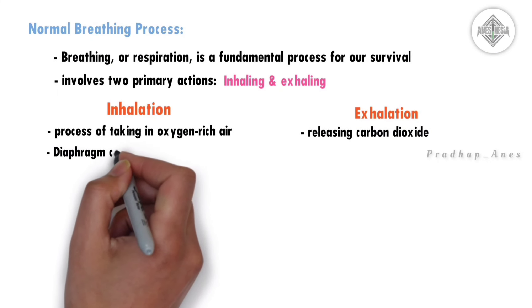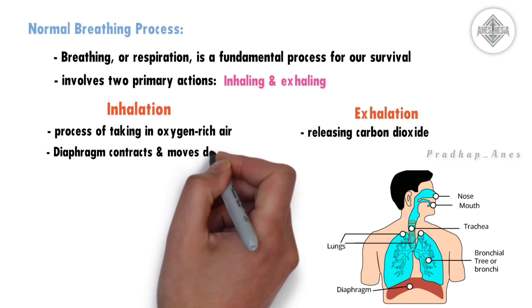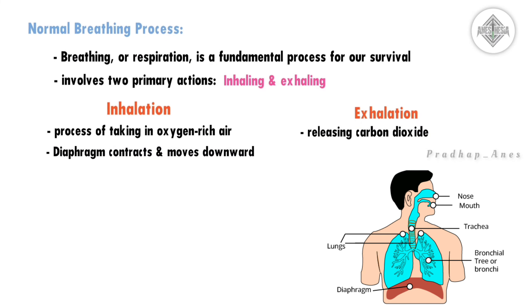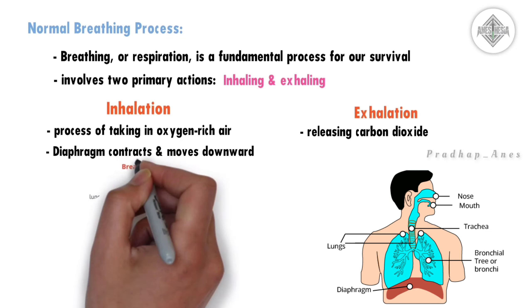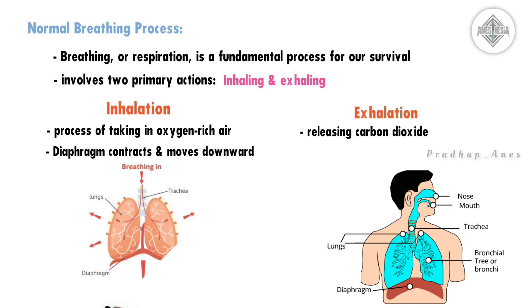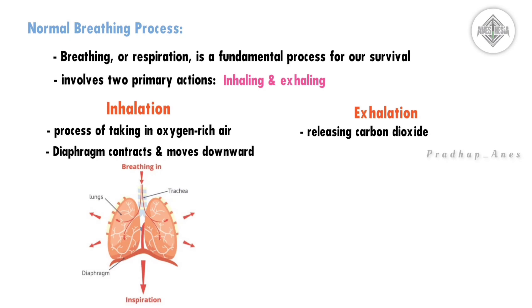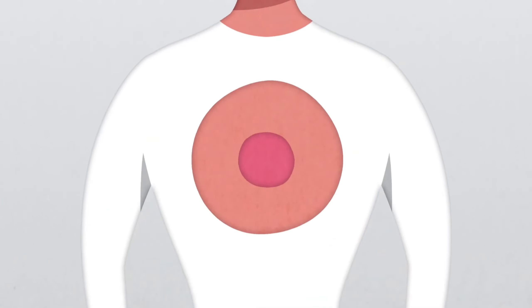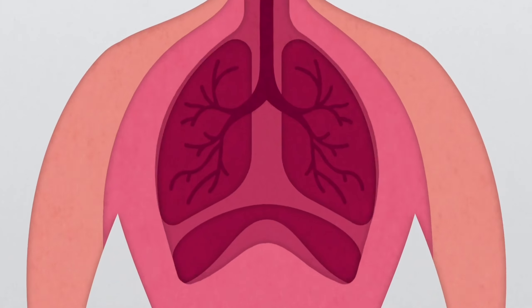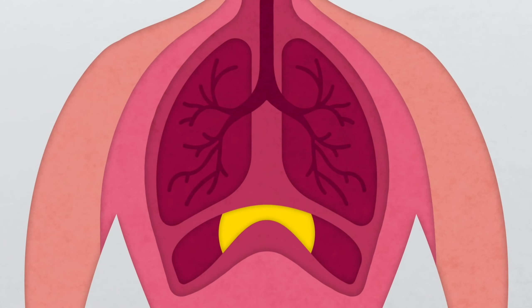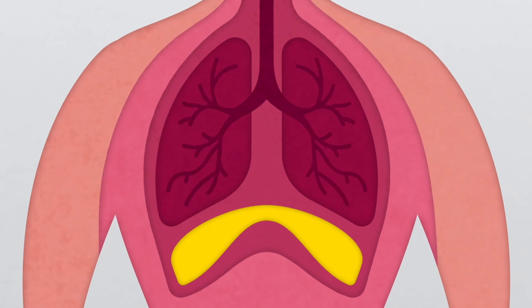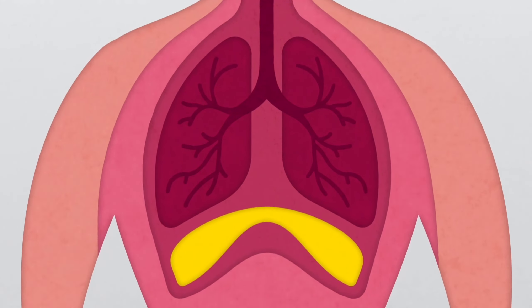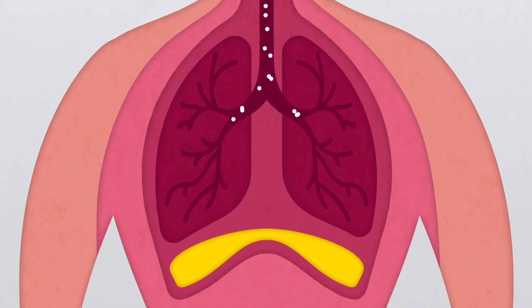During inhalation, the diaphragm, which is an important muscle beneath our lungs, contracts and moves downward. This action enlarges the chest cavity. As a result, our lungs expand and fill with oxygen.